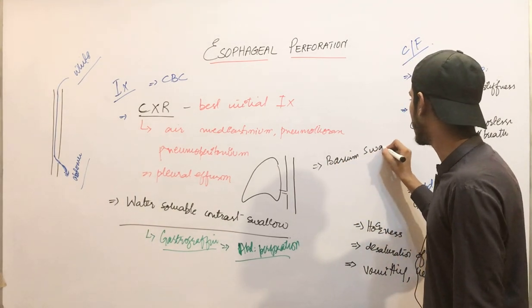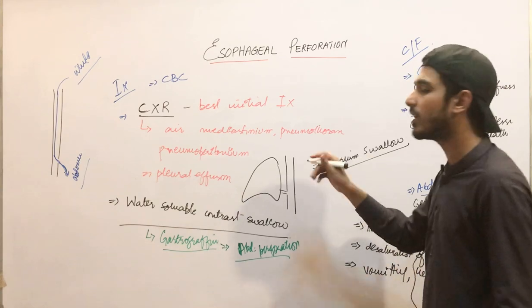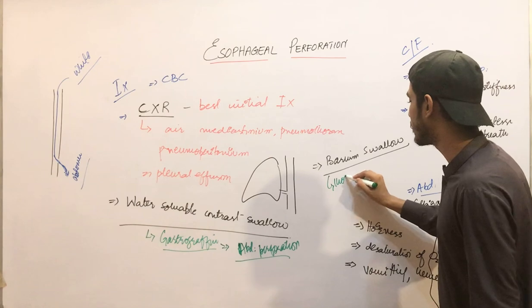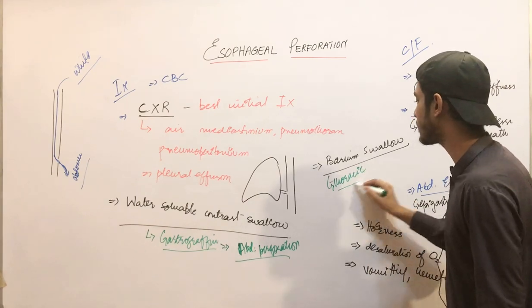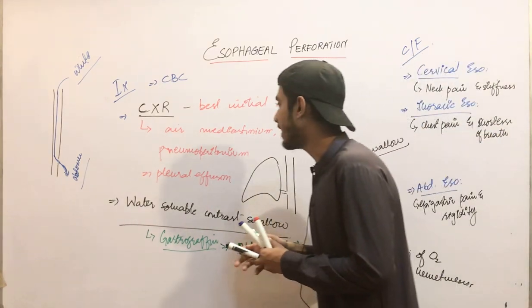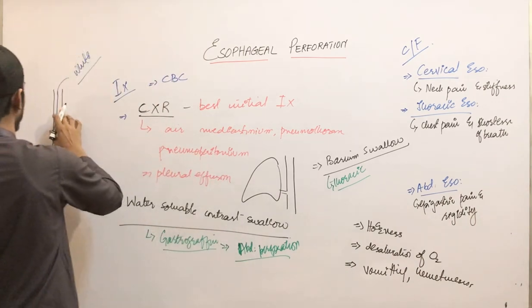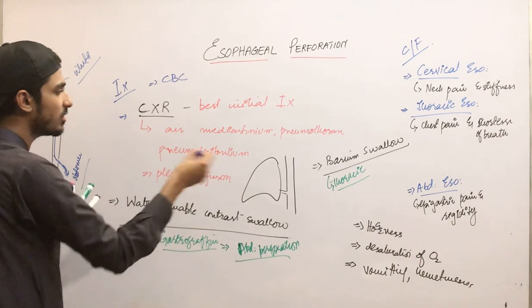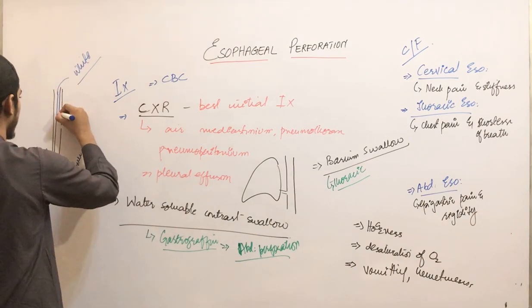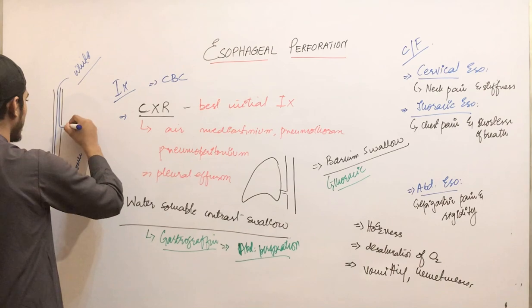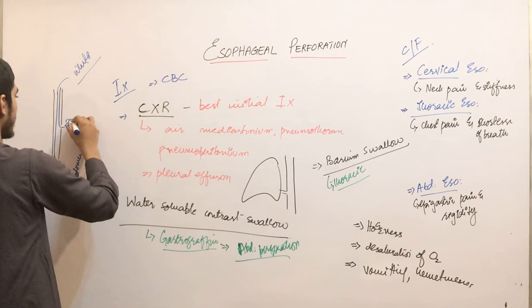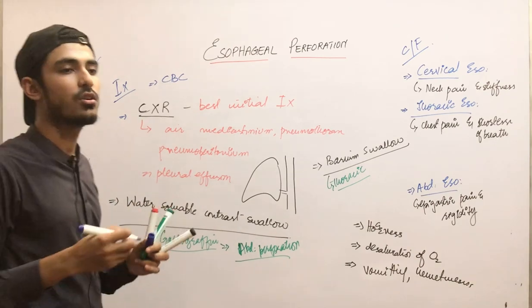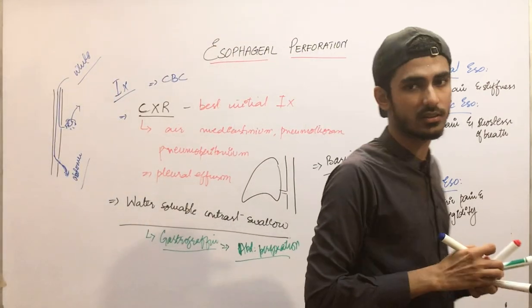The second contrast study is barium swallow, which is given in thoracic esophageal perforation. After giving barium swallow, X-ray imaging is carried out. If the esophagus is perforated in the thoracic part, the barium appears as a whitish area in the thoracic region, confirming thoracic perforation.